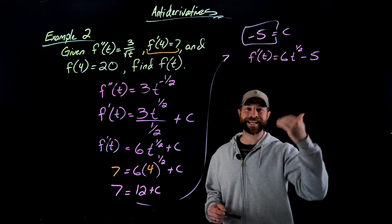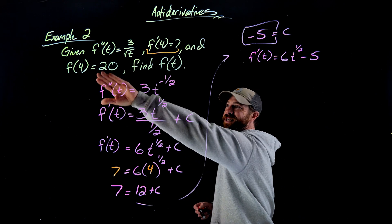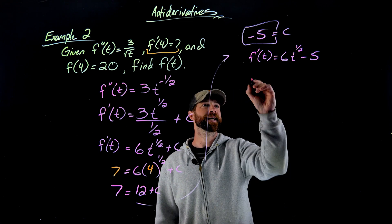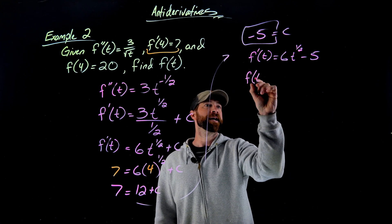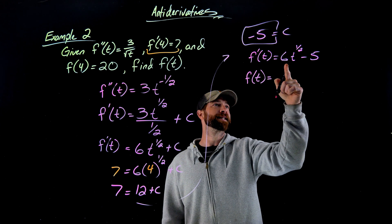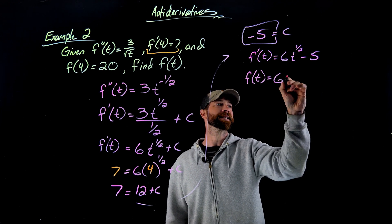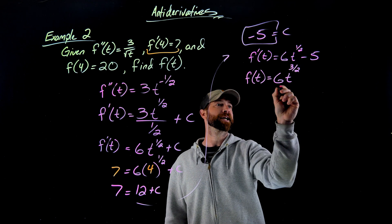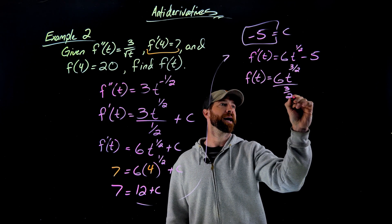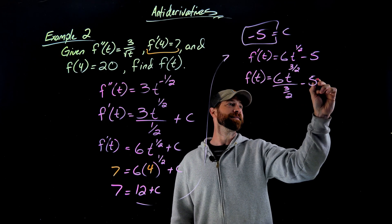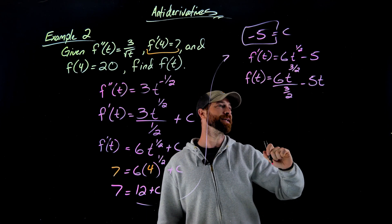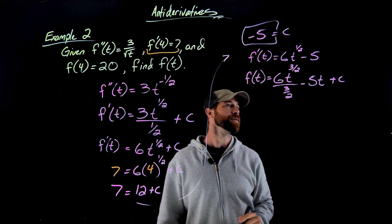All I need to do now is anti-differentiate again and then use this final initial condition to find my original function. So to find f of t, I'm going to anti-differentiate. The same thing is going to happen here. So this is 6t now to the 3 halves because I'm adding 1 to that exponent and dividing by 3 halves, minus 5 times t. This constant turns into a linear term when anti-differentiating, plus my c value.